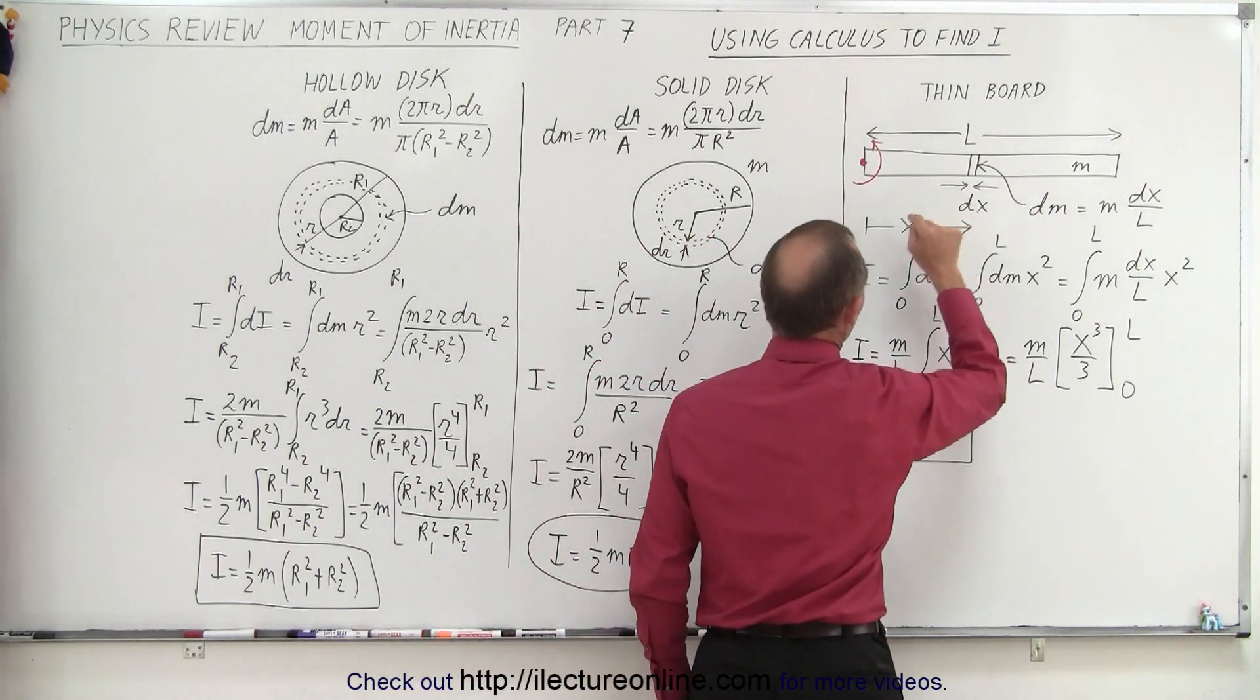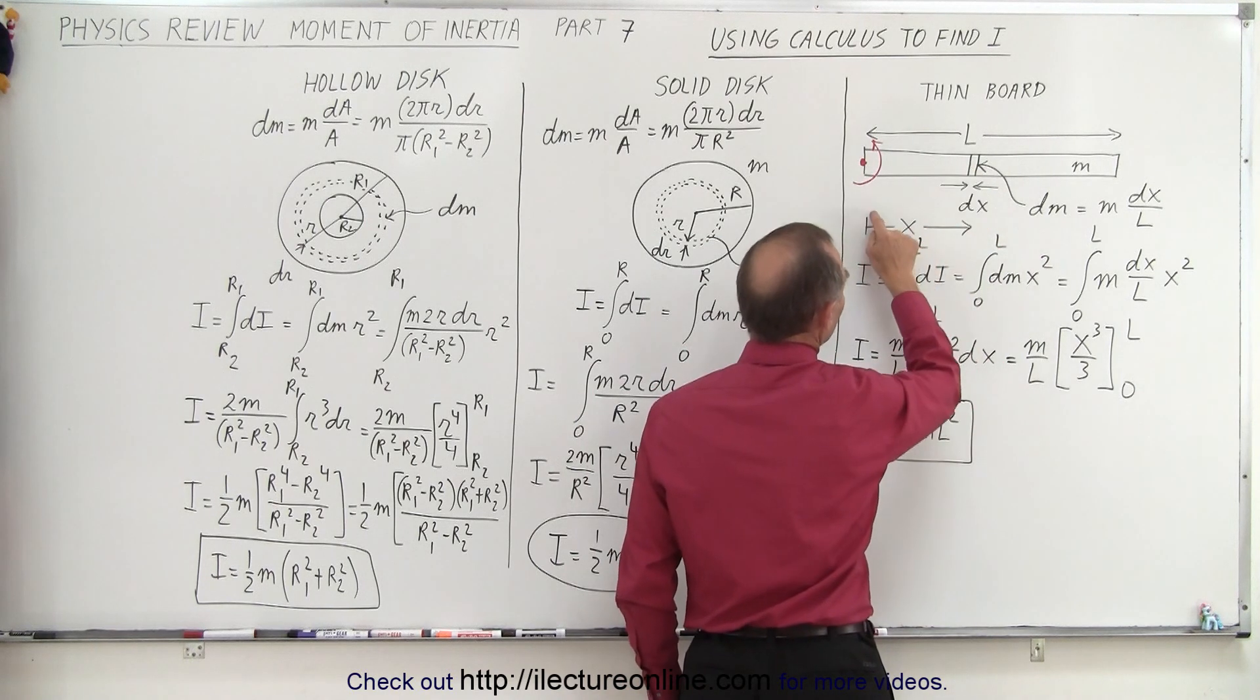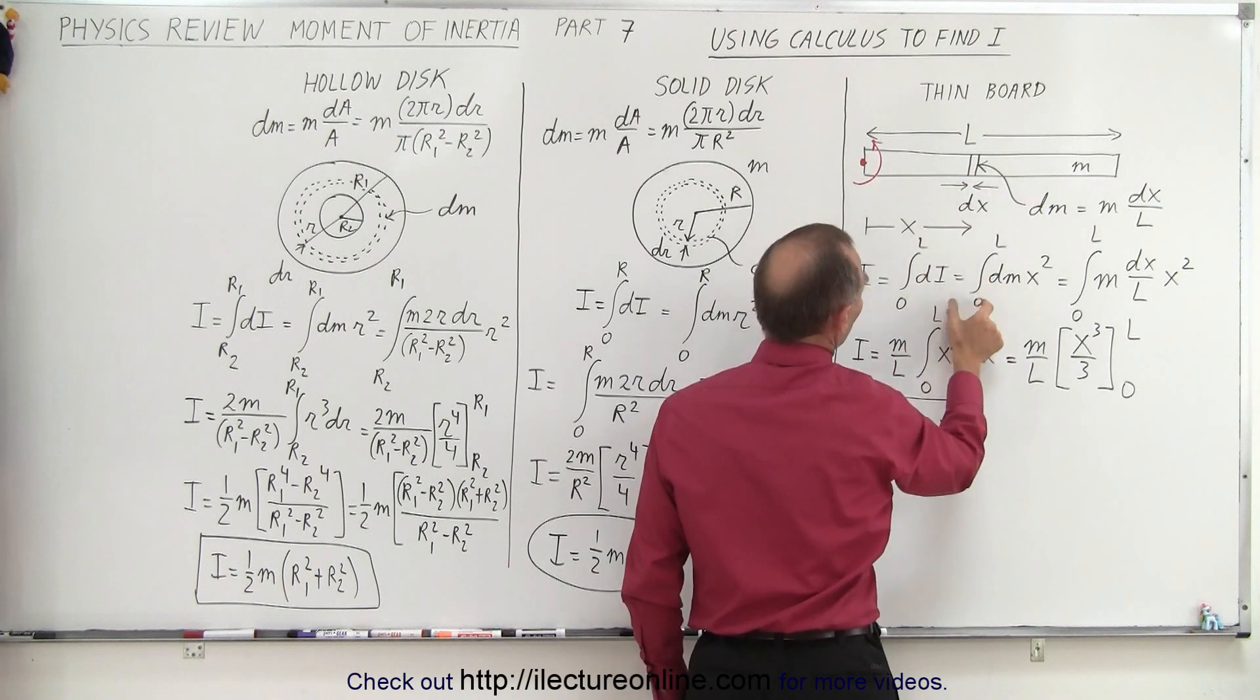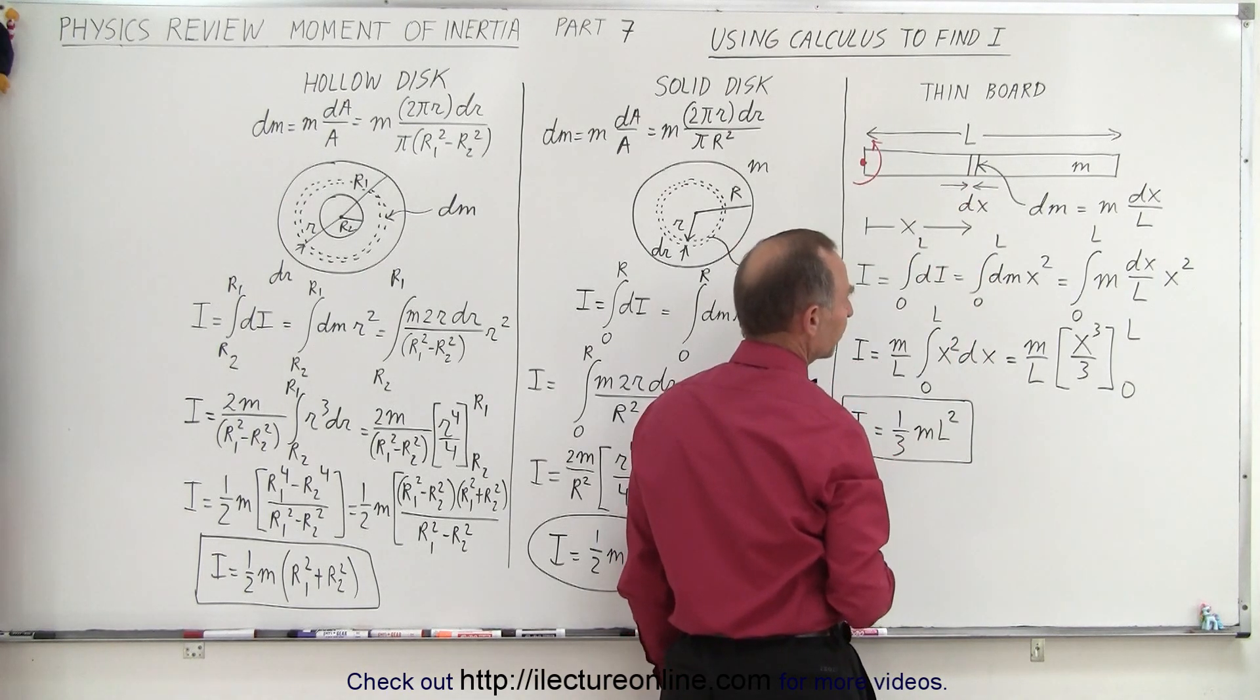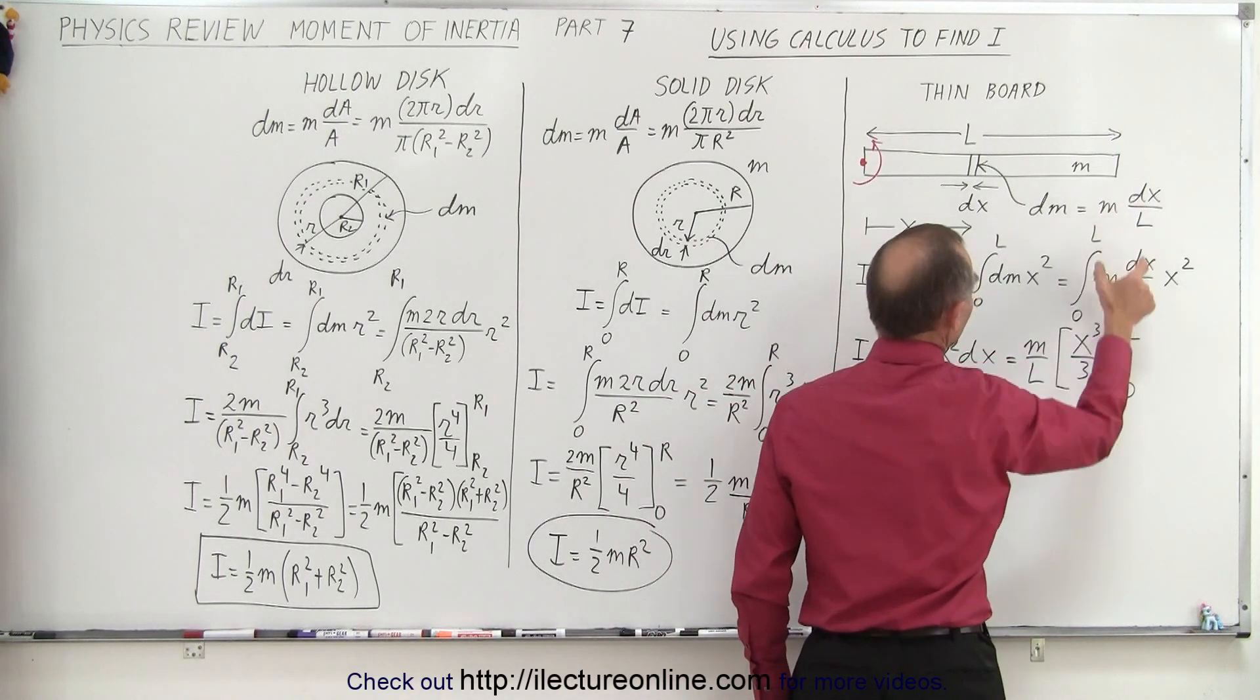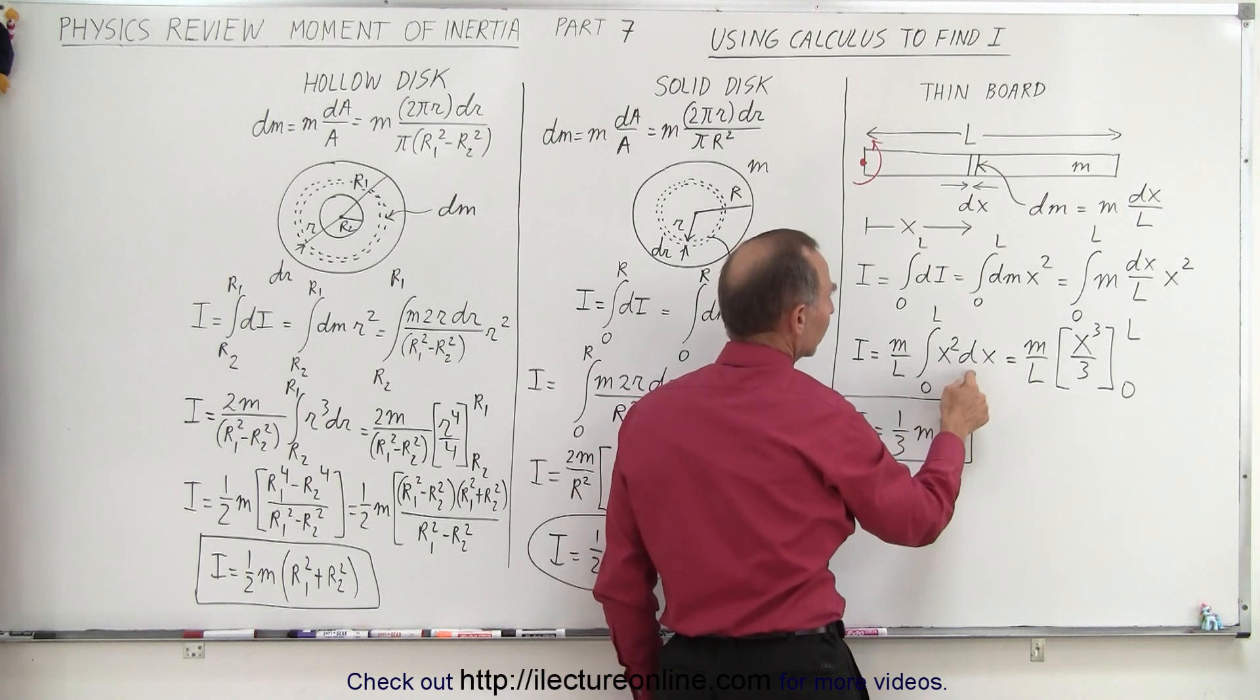Notice that little piece is distance x away, so the moment of inertia di for that little piece is going to be the mass, dm, times the distance squared from the point of rotation. dm can then be replaced by m times dx over l. m and l are constants that come outside the integral, so we end up with x squared dx.